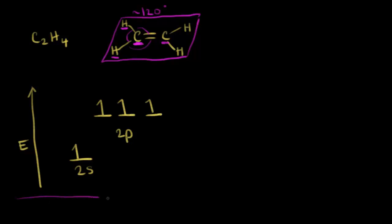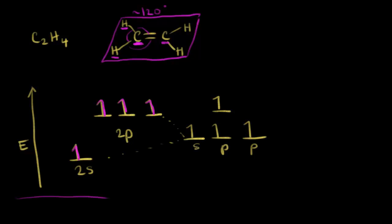We're going to start with our electron configurations in the excited state. We have carbon's four valence electrons represented. In the video on sp3 hybridization, we took all four orbitals and combined them to make four sp3 hybrid orbitals. In this case, we only have a carbon bonded to three atoms, so we only need three of our orbitals. We promote the s orbital up, and this time we only need two of the p orbitals. That's going to leave one p orbital unhybridized, and each one of these orbitals has one electron in it.